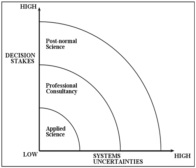Post-normal science represents a novel approach for the use of science on issues where facts are uncertain, values in dispute, stakes high and decisions urgent. PNS was developed in the 1990s by Silvio Funtowicz and Jerome R. Ravitz. It can be considered as a reaction to the styles of analysis based on risk and cost-benefit analysis prevailing at that time, and as an embodiment of concepts of a new, critical science, developed in previous works by the same authors.